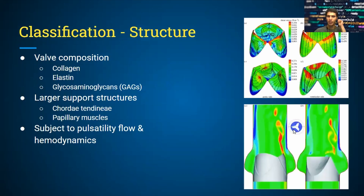Looking at these valves, they're made of specific components which give them their biomechanical properties — particularly collagen, elastin, and glycosaminoglycans, also known as GAGs. Together, these achieve specific biomechanical properties. As shown in the images, you can compute shear stresses, and the valves are subject to pulsatility and hemodynamics, since it's a tissue that directly interfaces with blood.